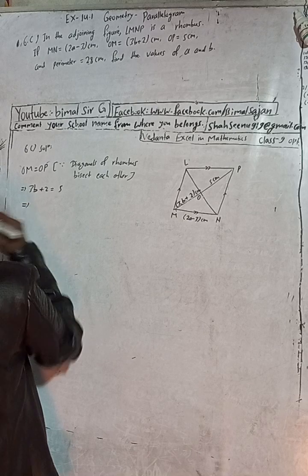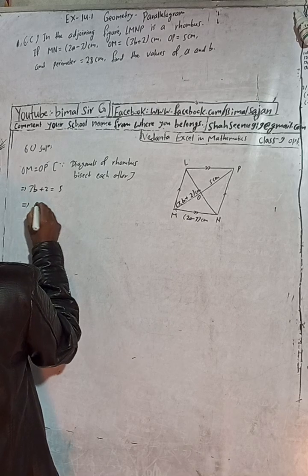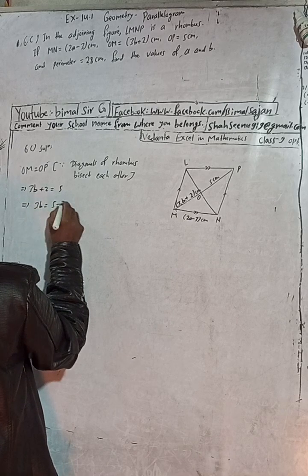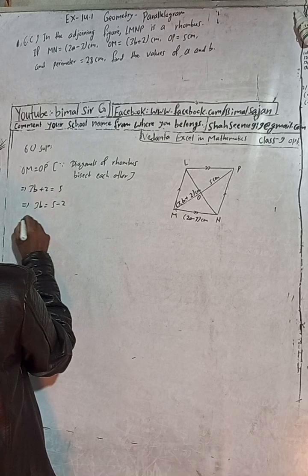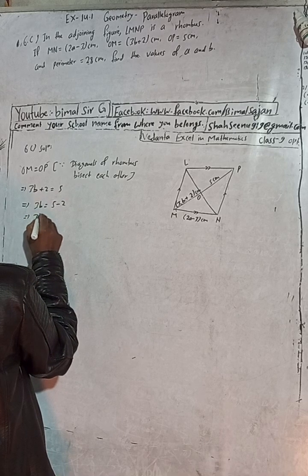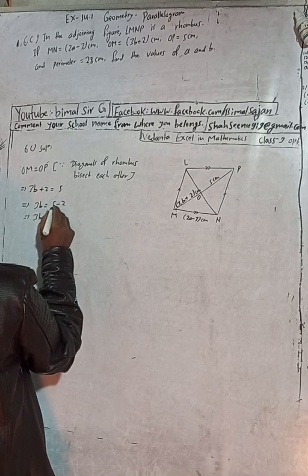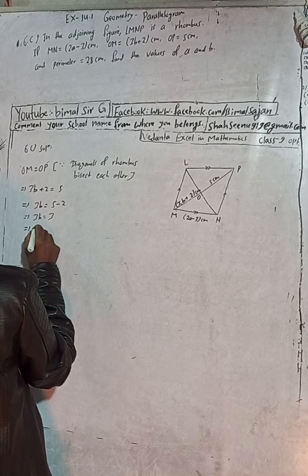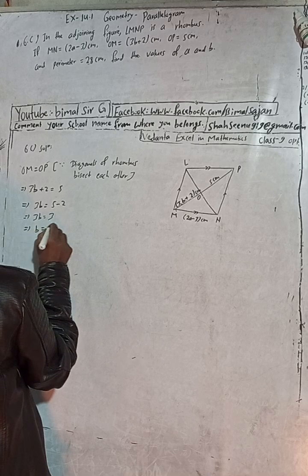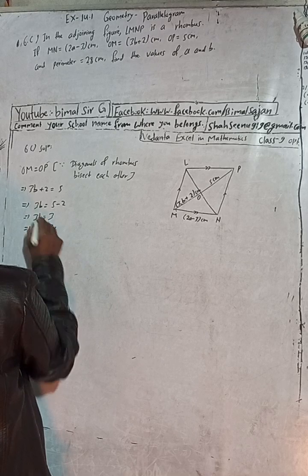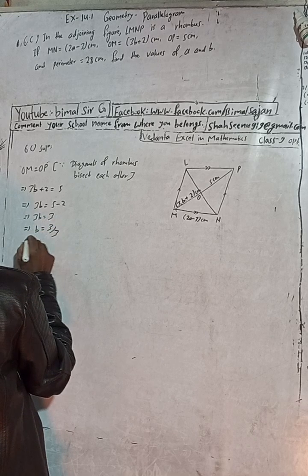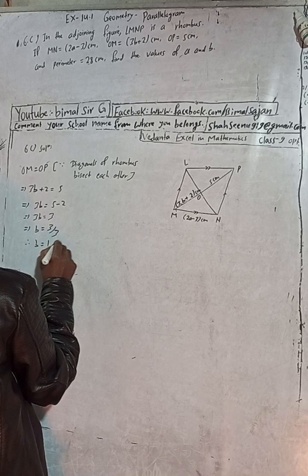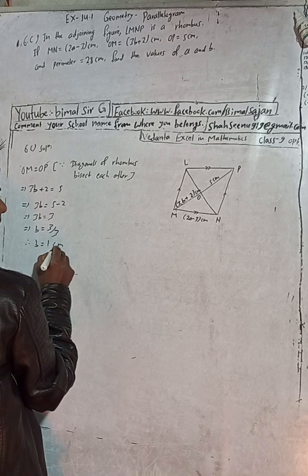Now solve this part. 3B plus 2 equals 5, so 3B equals 5 minus 2, which is 3. This implies B equals 3 divided by 3. Therefore B is equal to 1.